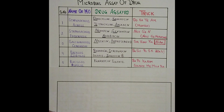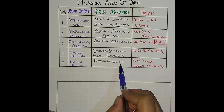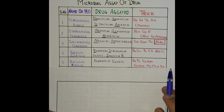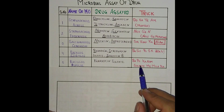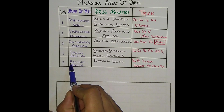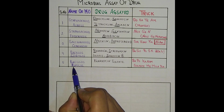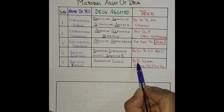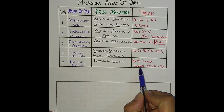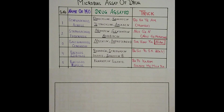The next one is Bacillus pumilus, and the drug is Kanamycin sulfate. The trick is 'Bapu ka naam sulfate mein mila diya': BA for Bacillus, PU for pumilus. 'Bapu ka naam sulfate mein mila diya' — a very interesting and easy mnemonic.